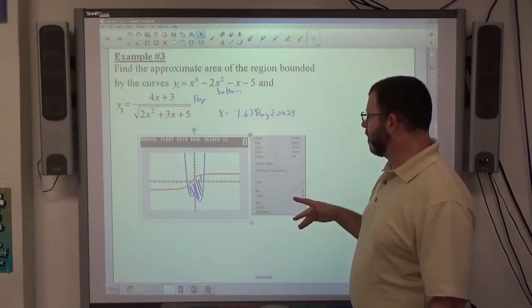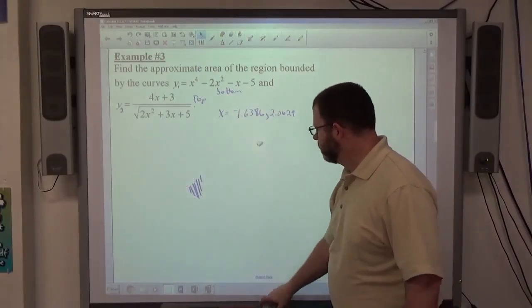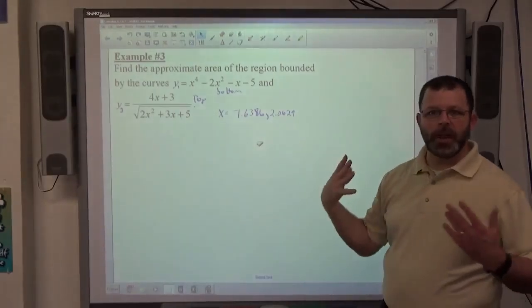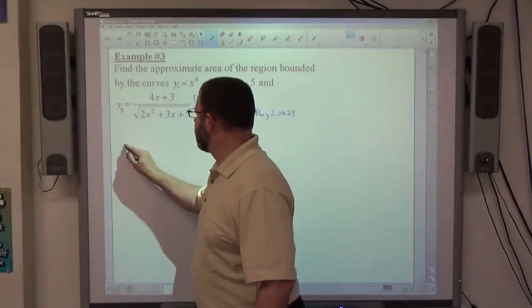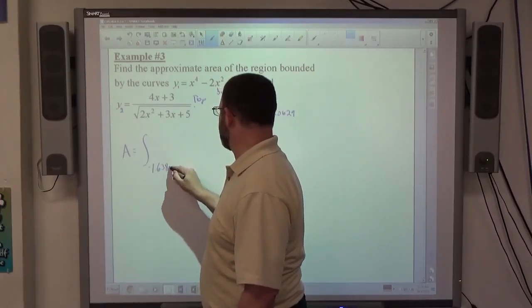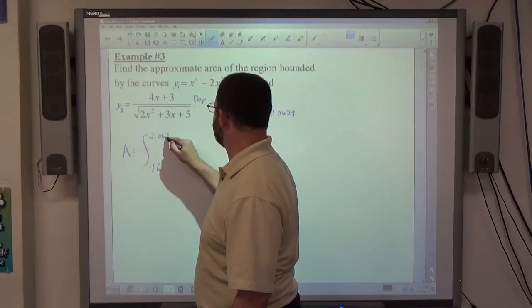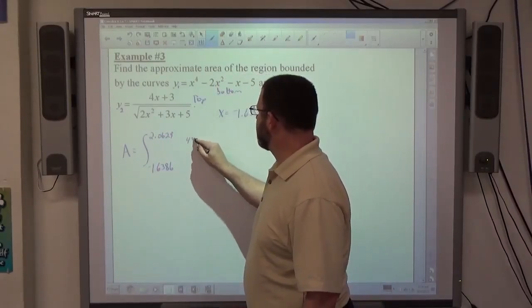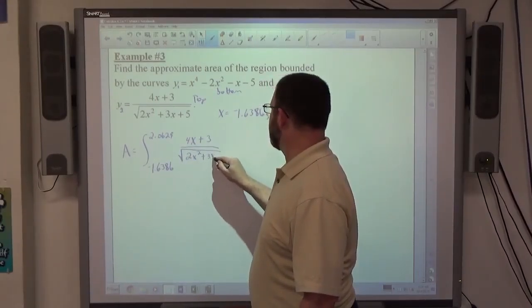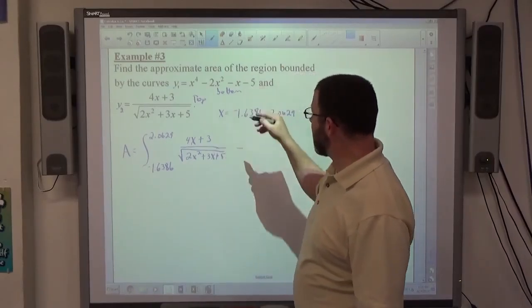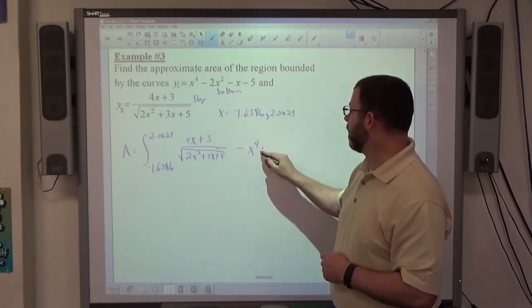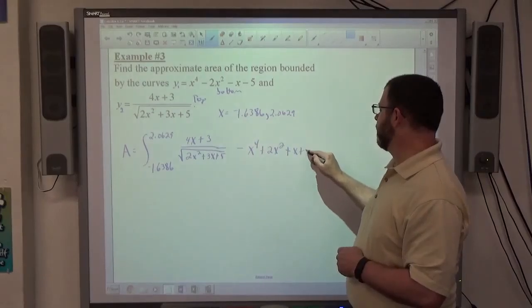And again, that's everything I need to define from the graph. So at this point, I know the top, I know the bottom, I know the left and the right. So that's everything I need to know to set up an integral. The area is going to equal the integral from negative 1.6386 up to 2.0629 of 4x plus 3 over the square root of 2x squared plus 3x plus 5 minus the second one. I'm going to go ahead and subtract it. So minus that's just going to be minus each thing. So minus x to the fourth plus 2x squared plus x plus 5 dx.